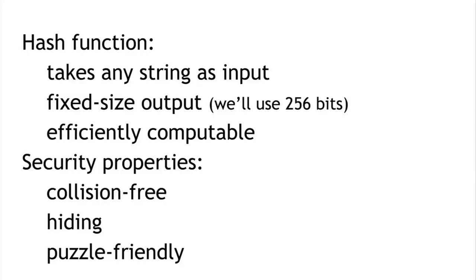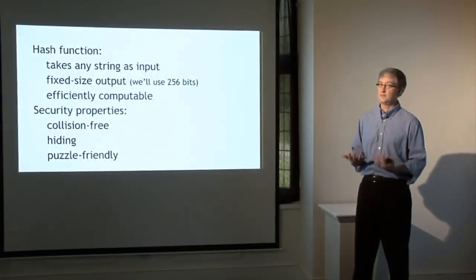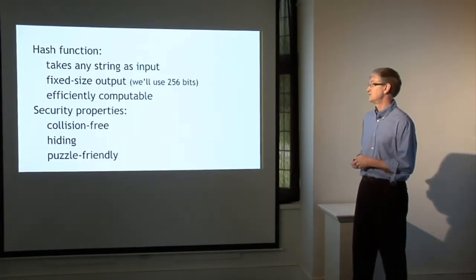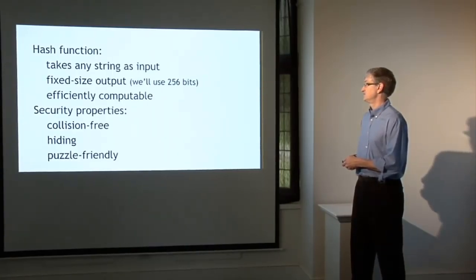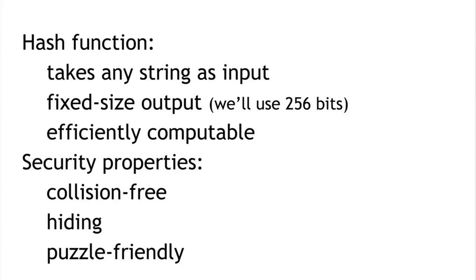A cryptographic hash function is a mathematical function with three attributes. First, a hash function can take any string as input — absolutely any string of any size. It produces a fixed-size output; we'll use 256 bits in this series of lectures because that's what Bitcoin does. And it has to be efficiently computable, meaning given a string, in a reasonable length of time you can figure out what the output is. We're going to need hash functions that are cryptographically secure, focusing on three particular properties: that the function is collision-free, that it has a hiding property, and that it's puzzle-friendly.